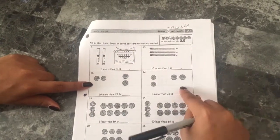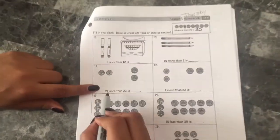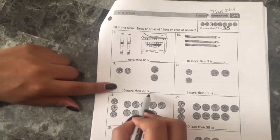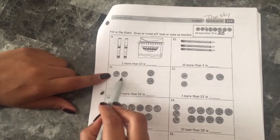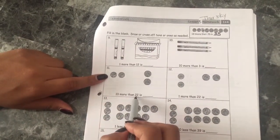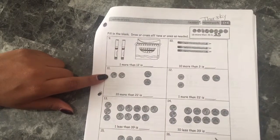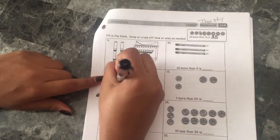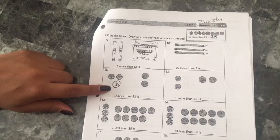So we're gonna do these two problems. We'll start with this one first. It says ten more than 22 is. So we have two dimes and two pennies which is showing us 22. So ten more, we're just gonna draw a circle and put ten. That's gonna represent another dime.